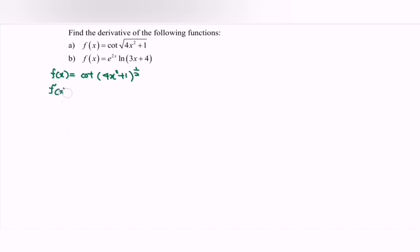We have f'(x). Differentiate the cot and we will have negative cosecant squared of 4x² plus 1 to the power of 1/2. Then we have to differentiate the internal function, where we have this part.